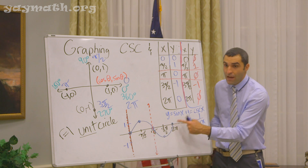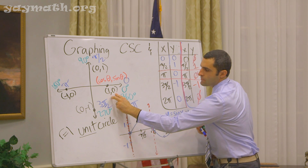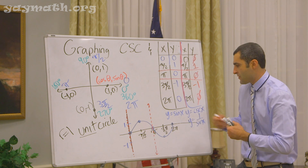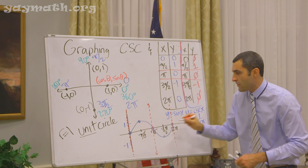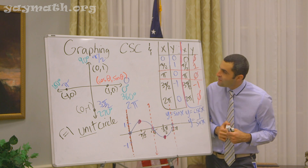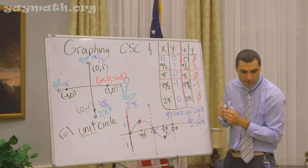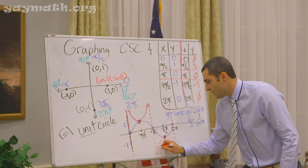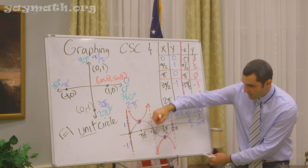Sine of pi is zero, so one over zero would make cosecant undefined right here as well. Every value of zero becomes one over zero — undefined. Sine of two pi is also zero, so x is not allowed to be two pi in cosecant either — we put an asymptote there. Now we do have common points: the peak is shared at pi over two comma one, and the valley is shared at three pi over two comma negative one.